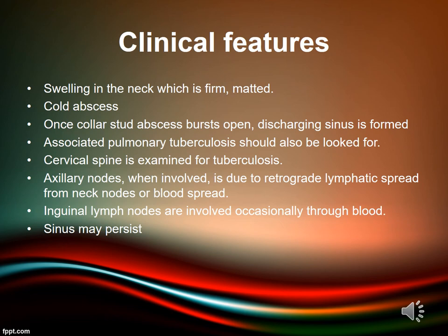Associated pulmonary tuberculosis should be looked for, and the cervical spine should be examined for tuberculosis. Axillary lymph nodes, when involved, are due to retrograde lymphatic spread from neck nodes or blood spread. Inguinal lymph nodes are involved occasionally through blood.